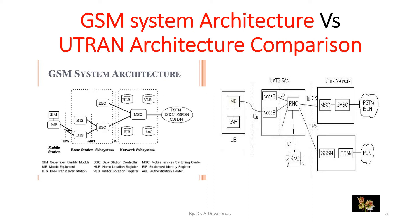In the GSM architecture, we will be having a network subsystem. Here in the UTRAN architecture, we will be having core network. In the GSM architecture, the network subsystem is having the link between the PSTN, ISDN, PSDP, and PDN. In the UTRAN architecture, the core network is having the link between the PSDN, ISDN, and PDN. In further slides, we will discuss in detail about the UTRAN architecture.